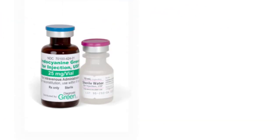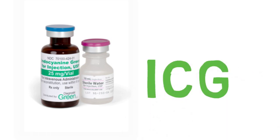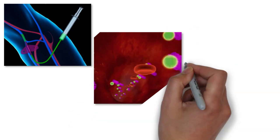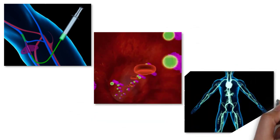A special dye called endocyanine green, or ICG, is administered to the patient. This dye safely attaches to the circulating blood. When illuminated with an infrared light, the dye fluoresces or glows and can be seen by the camera.